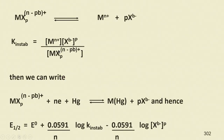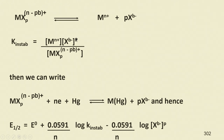For example, a complex metal ion MX_p^(n-pb) can dissociate to give the metal ion and the ligand. The instability constant can be calculated using: K_instability = [M^(n+)] × [X^(b-)]^p divided by the concentration of the complex (products over reactants).